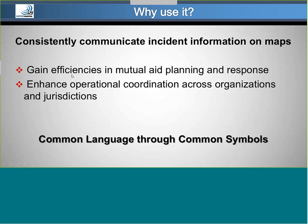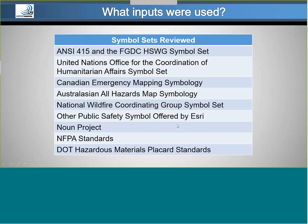Why is it important for everyone at the local and state level to use this? Fundamentally, we need to be able to consistently communicate incident information on maps. That certainly supports operational coordination across jurisdictions for both planning and pre-scripted mission planning as well as response, recovery, and in some cases prevention, protection, and mitigation efforts. It's a common language through common symbols. Provided here is a short table of some of the different symbology sources that we have examined across different efforts over the past five years.